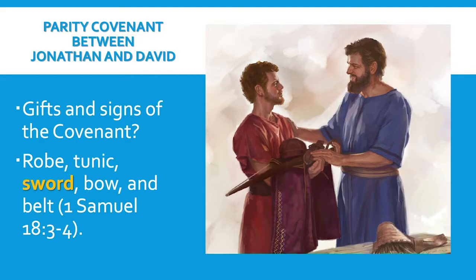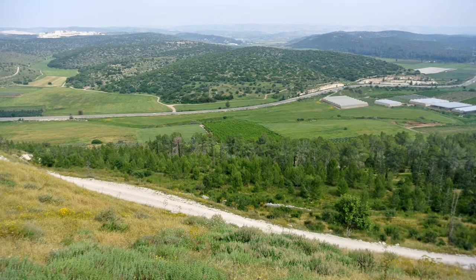We have talked about the parity covenant between Jonathan and David and how the signs of that covenant were the robe, the tunic, the bow, the belt, and of course the famous sword. I took you in times past to the Valley of Elah. And I want to ask you now, just by way of review: have you been encouraging those around you who may be experiencing God's blessings? Don't be jealous, but be joyful and encourage those experiencing God's blessings, just like Jonathan encouraged young David.